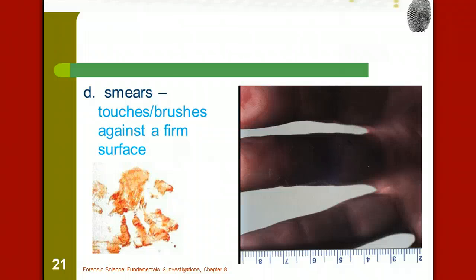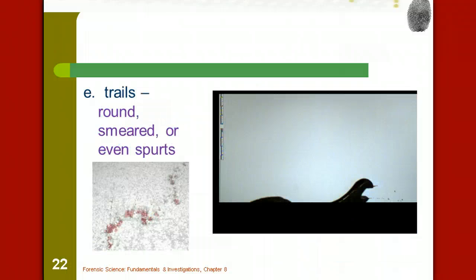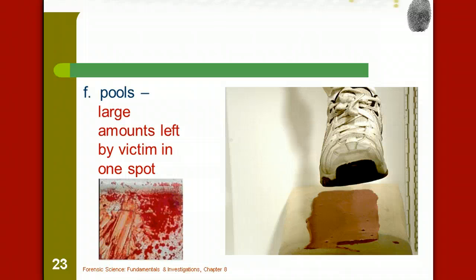Then there are smears. You can see an upside-down handprint there. This is where there are touches or brushes against a firm surface, where you wouldn't be able to get any fingerprints or palm prints, but we would still be able to see the placement of the hand, but it's been smeared. Trails are another one. Obviously, this is going to be someone walking away. Either they're injured or the weapon is dripping with blood. Those are going to produce round, smeared, and sometimes even spurts, depending on the severity or the location of the injury. Then there are what we call pools of blood, which leave large amounts of blood in one spot, typically from the victim.